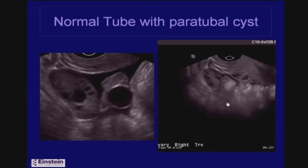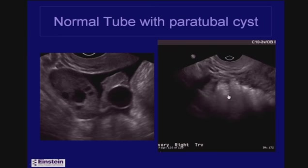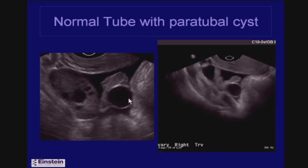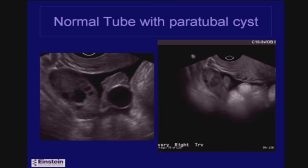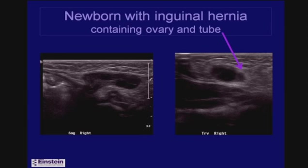Here the fallopian tube comes in and out of view as it surrounds the ovary. This patient has a small paratubal cyst — there's a second one — and you can see a larger paratubal cyst on the other side. They're very common, and if you cannot see the fallopian tube you just get a sense of a cyst floating in the middle of nowhere, but generally it's connected to the tube.